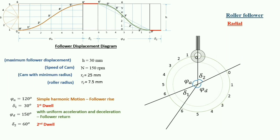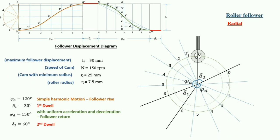We draw lines starting from the center point passing through each division point for both phi A and phi D. We then mark the displacement values on these lines from the displacement diagram: 0 to 0', 1 to 1', 2 to 2', 3 to 3', 4 to 4', 5 to 5', 6 to 6' for ascent, and similarly for phi D from 6-6' back to 0-0'. All marked points are joined with a smooth curve.